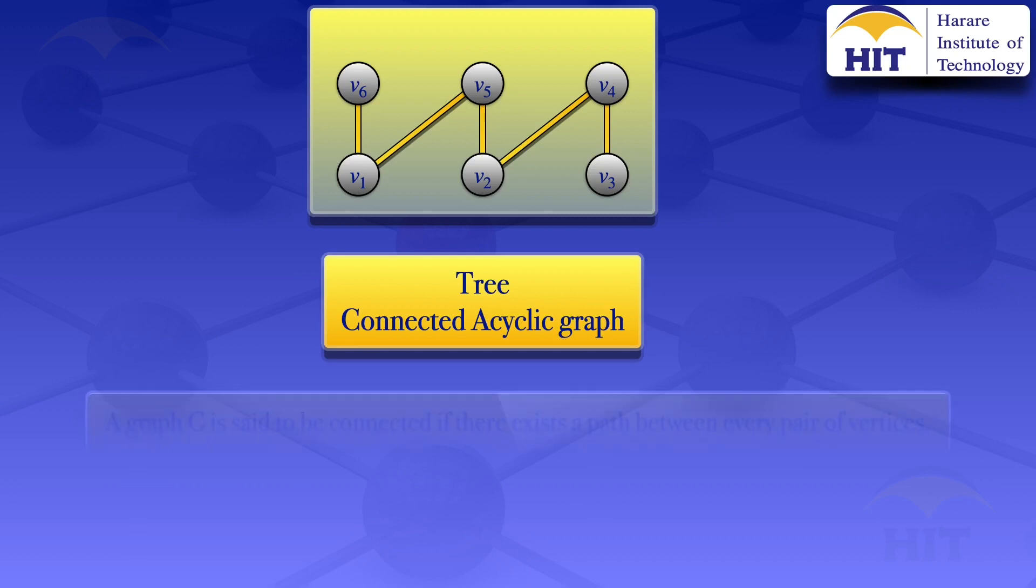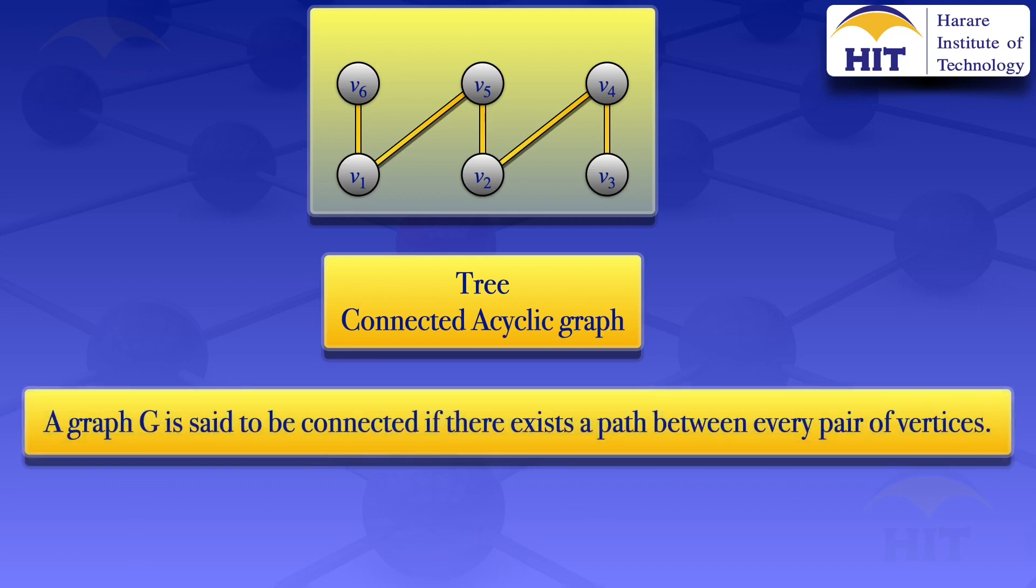A graph G is said to be connected if there exists a path between every pair of vertices. In this case, we see that there is a path between every pair of the given six vertices, so we can conclude that the graph is connected.